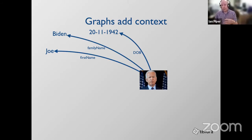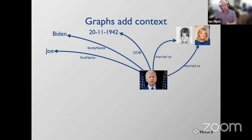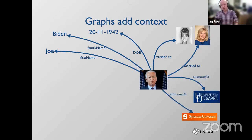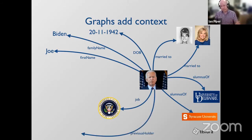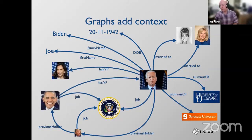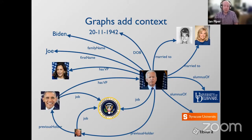Besides data properties, we can link this person to other people using meaningful predicates — semantic verbs that link one thing to another. We can link to educational institutions, which lets us ask 'show me all people who are alumni of the University of Delaware.' This person also has a job. Building up this network, this graph of information about a person, means we can ask questions like 'show me all people who have held the job of President of the United States' or 'show me all people who have been both Vice President and President.'